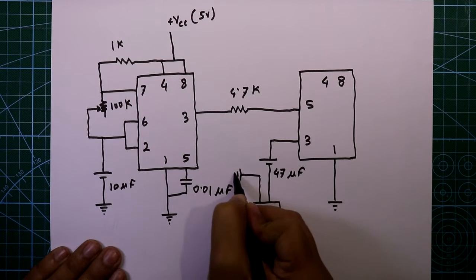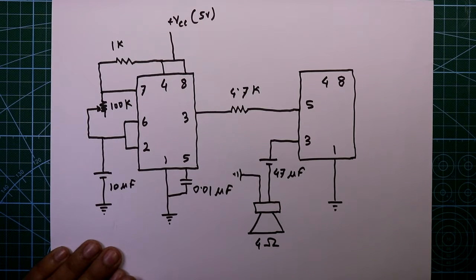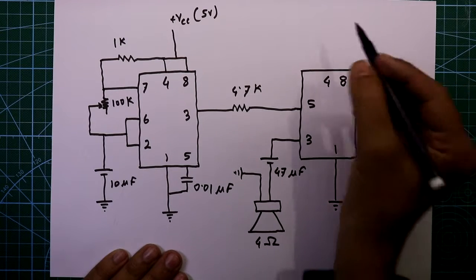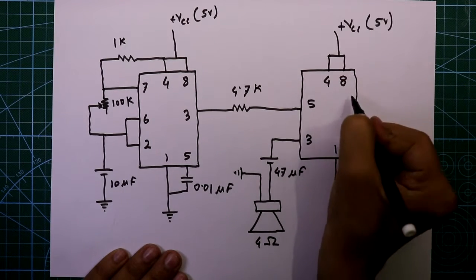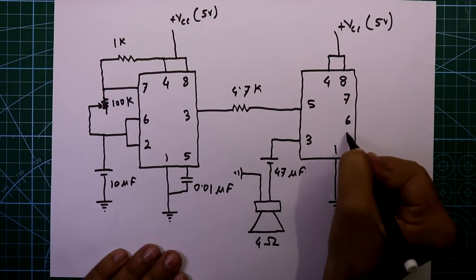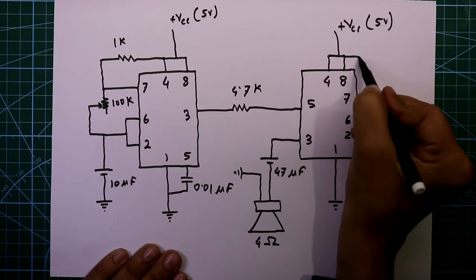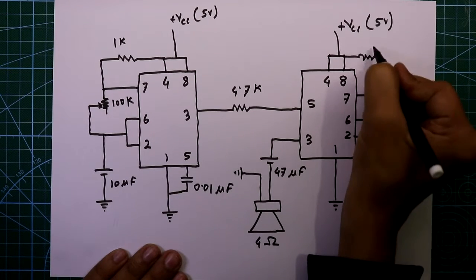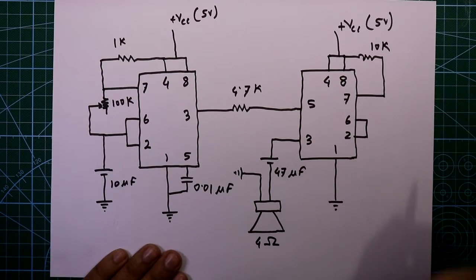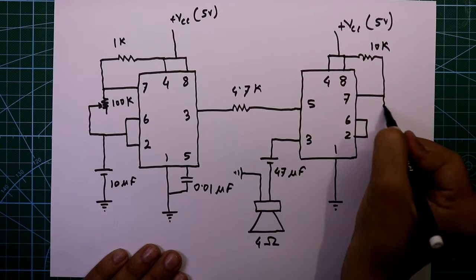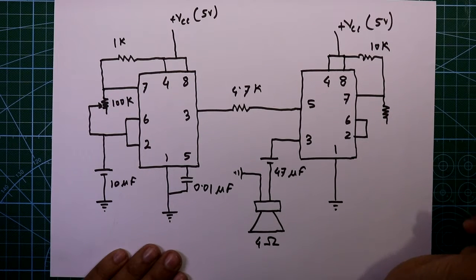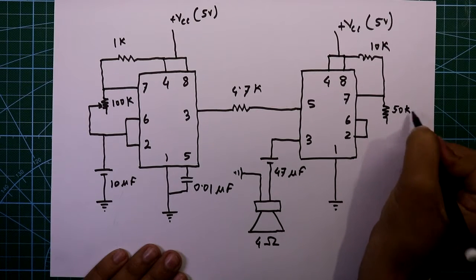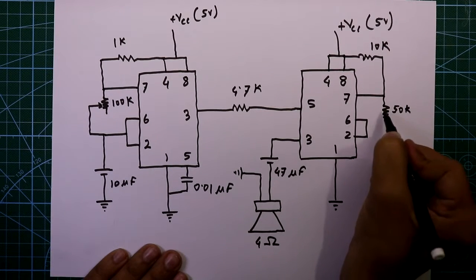Another pin of the speaker will go to ground — it is 4 ohms. This IC also we have to operate in astable mode. One resistor is connected between pin number 7 and plus VCC — the value is 10 kilohms — and another potentiometer is connected here, the value is 50 kilohms.